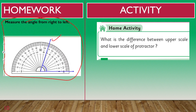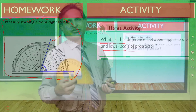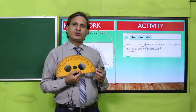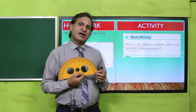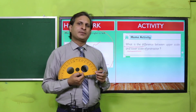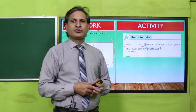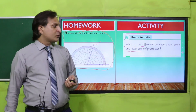Additionally, observe the protractor and write the difference between the upper scale and the lower scale in your notebook. Bring your notebook with the written difference and submit it to your teacher.